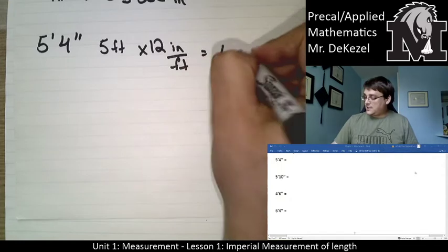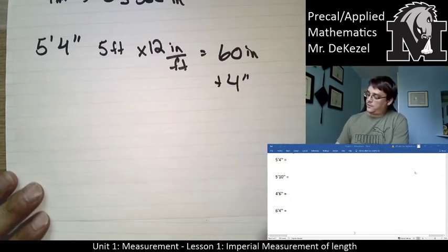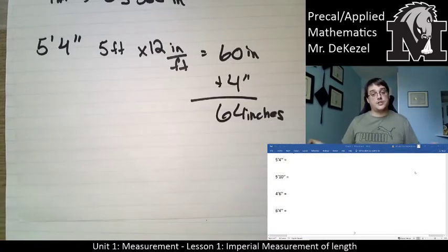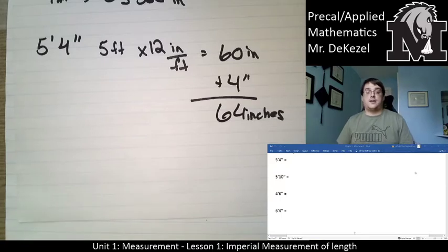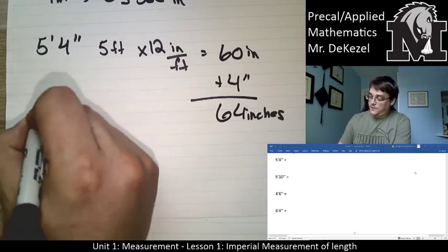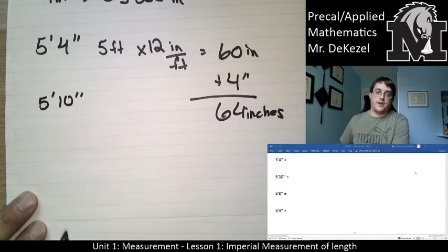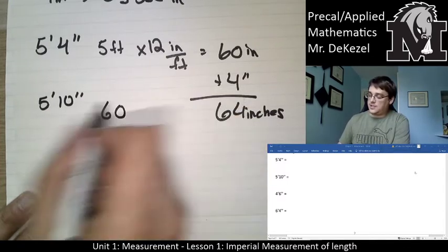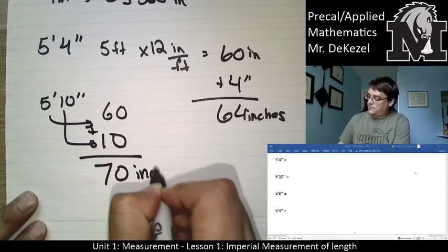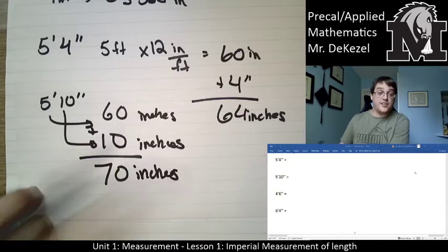Five feet times 12 equals 60 inches, and then we add our four inches, for a total of 64 inches. That is how you combine units. Next example: 5 feet 10 inches. We already know that 5 times 12 is 60, so we've already got 60 inches for the feet portion. Now we add the 10, for a total of 70 inches.